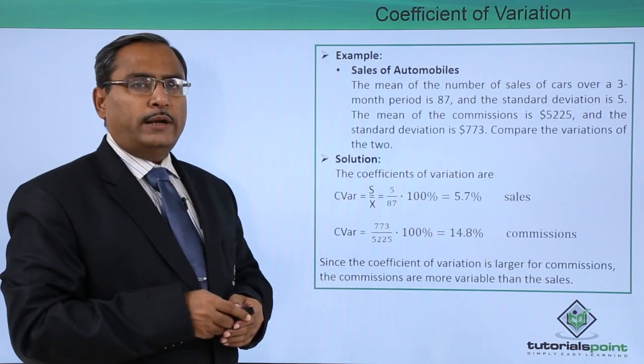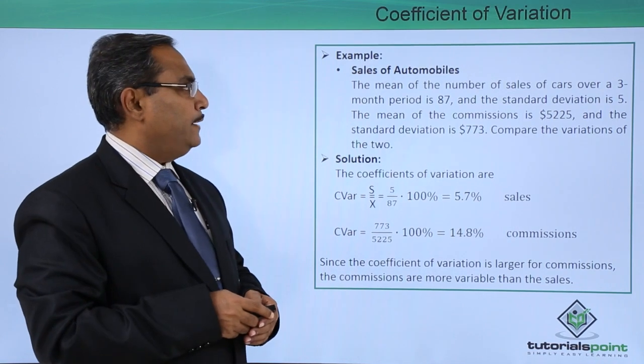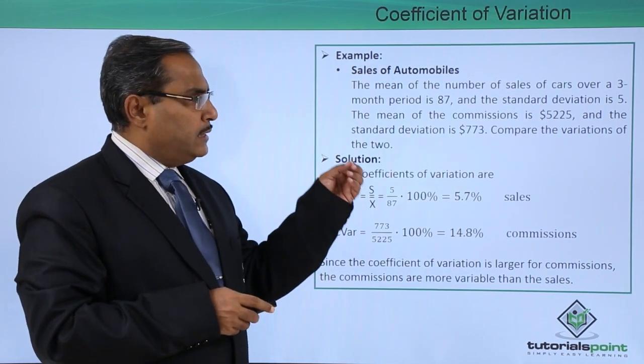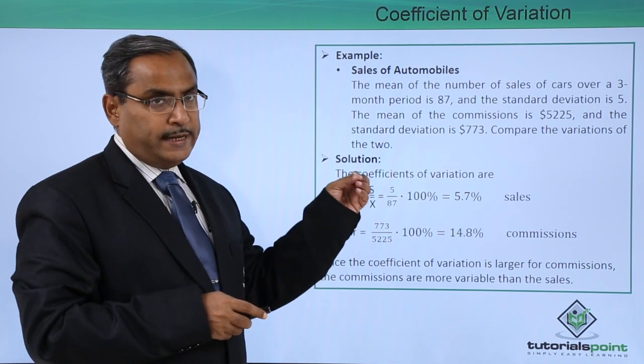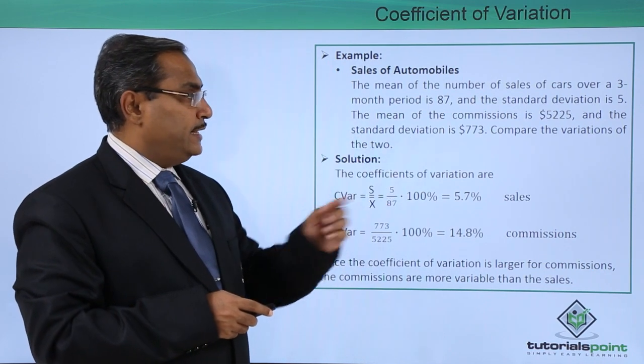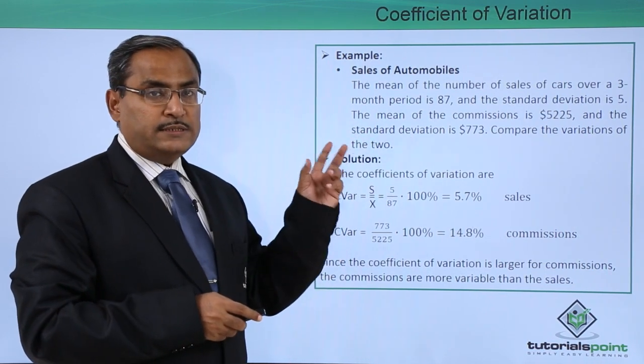Now, let us go for one example for better understanding. Sales of automobiles: the mean of the number of sales of cars over a three-month period is 87 and the standard deviation is 5. So, that is for the sales of the car, the mean is 87 and standard deviation is 5.